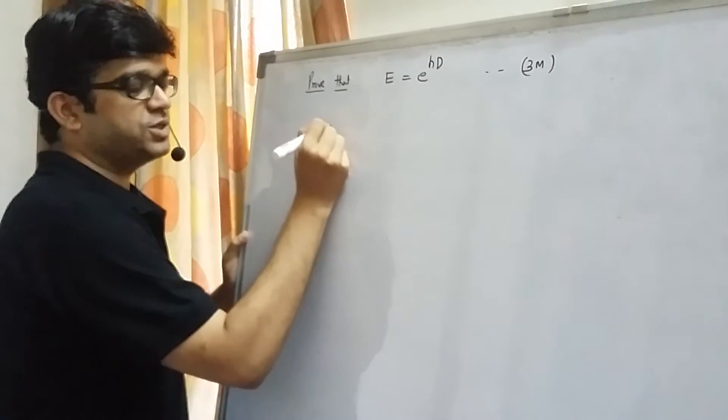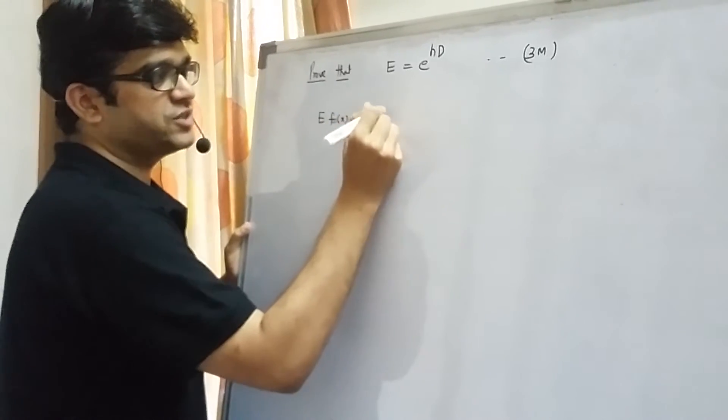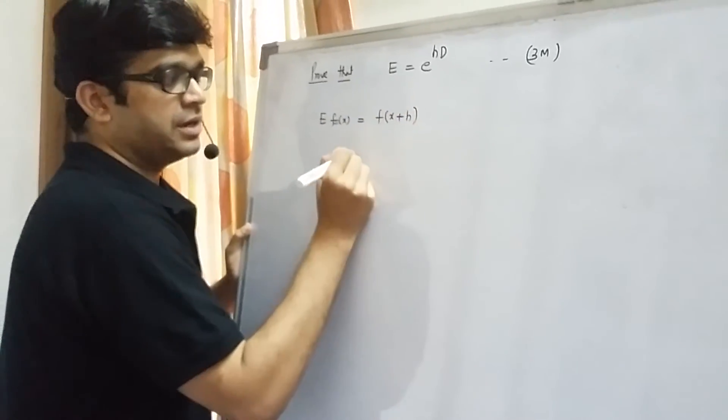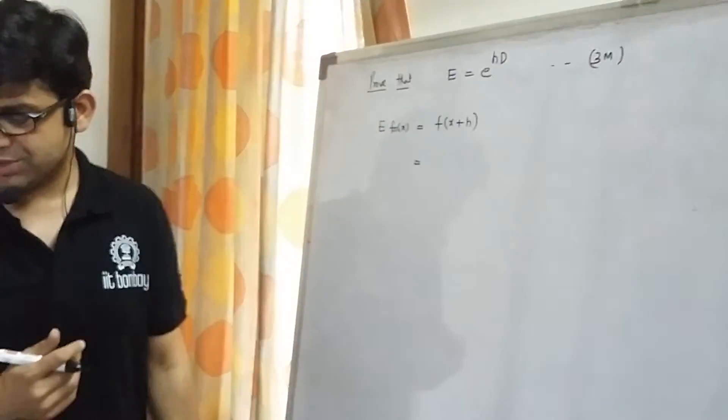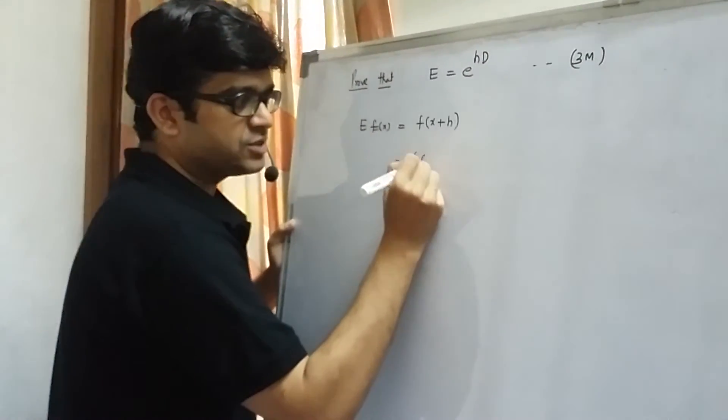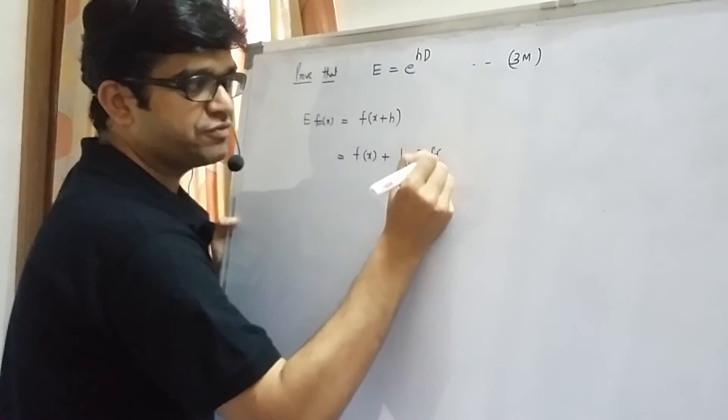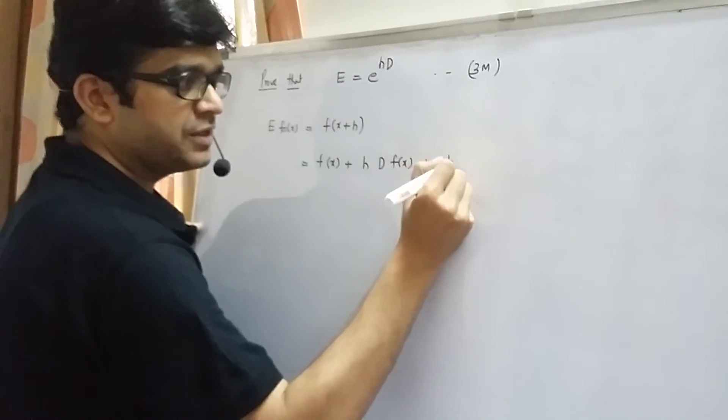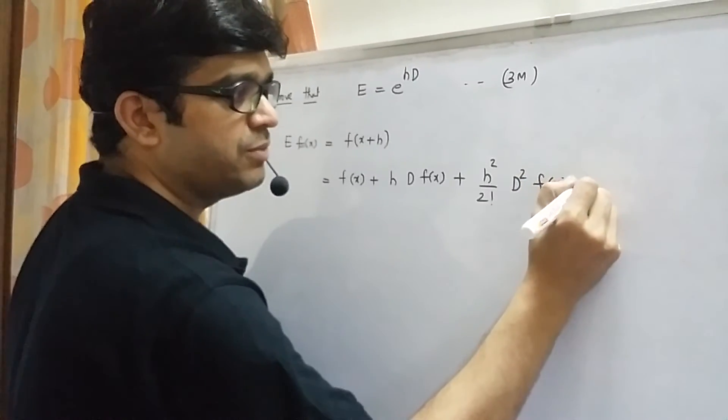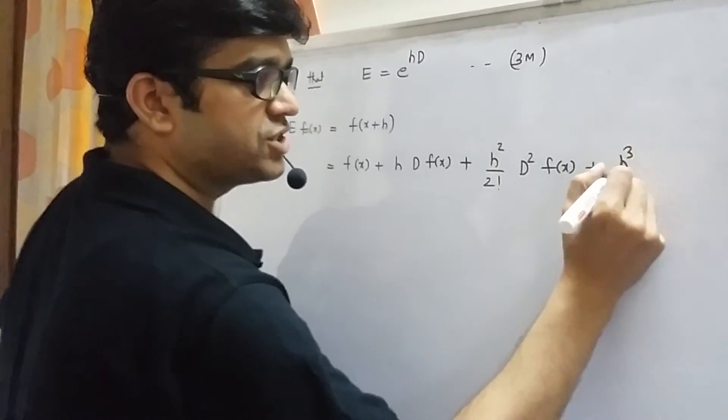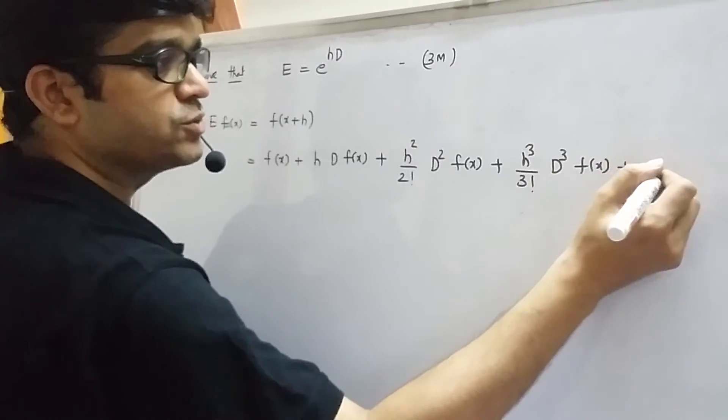Now what is E? E is nothing but E of f(x) is nothing but f of x plus h. Now we can expand f of x plus h using Taylor series. So what I am going to get is f of x plus h into derivative of f(x) which is d of f(x) plus h square by 2 factorial into second derivative of f(x) and this goes on.